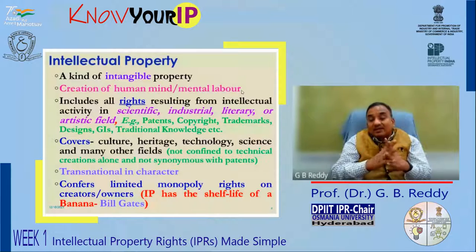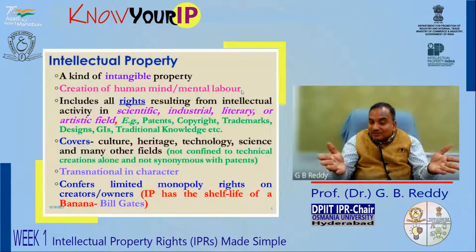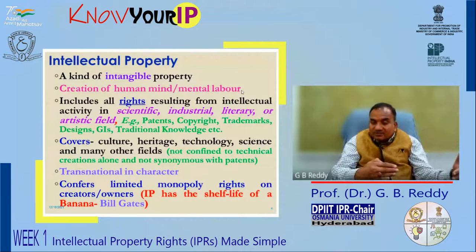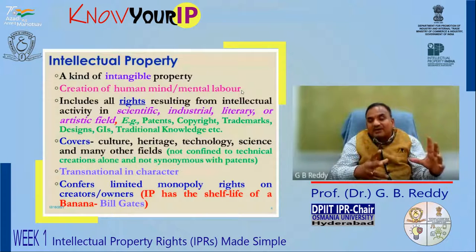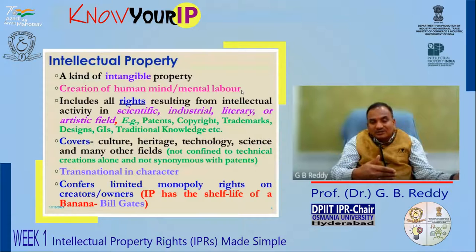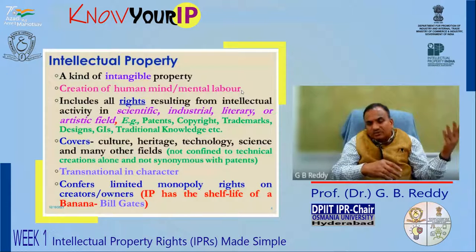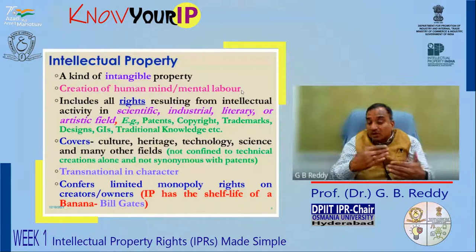Another important factor is that intellectual property is in the form of information. It may be technological information in the form of an invention that may be patented, or symbolic information in the form of marks including trademarks and service marks, or ornamental and aesthetic information protected by way of industrial designs. You cannot keep information confined to a safe deposit locker — information travels very fast, especially in this digitized world. What is created in India today can be accessed by somebody in Timbuktu or Surinam within no time, without affecting the original copy.